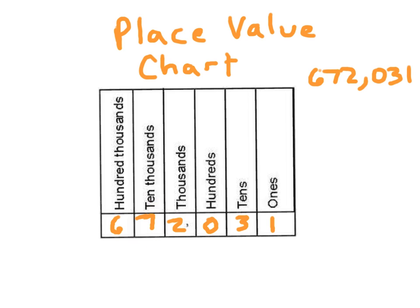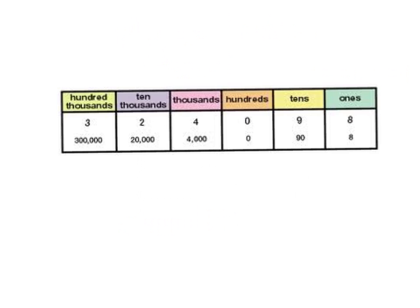Here's another example. The number 324,098. That 9 is in the tens place. This is the digit, and its value is 90. This 4 is in the thousands place, and its value is 4,000.